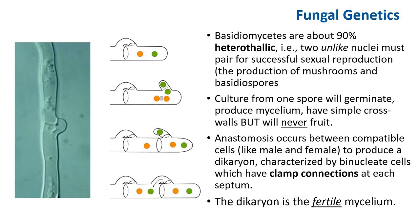Basidiomycetes are about 90% heterothallic, requiring two unlike nuclei for successful sexual reproduction. The production of a mushroom and basidiospores requires two mating pairs. The arrival of spores on a suitable substrate may result in spore germination and production of hyphae, but the production of a fruiting body requires a dikaryon from two spores of different mating types. In the simplest heterothallic basidiomycetes, single spores — one male and one female, to use an understandable animal analogy — each germinate to produce hyphae of a single parental type. The hyphae have simple cross walls and will never fruit; anastomosis must occur between compatible cells to produce a dikaryon.